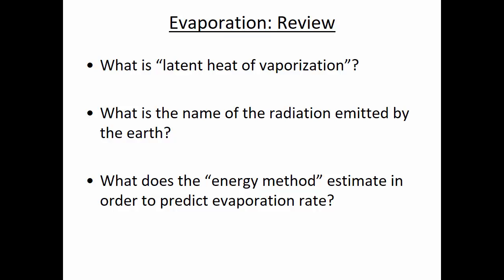The energy method estimates the radiation available to provide the latent heat of vaporization. The net radiation is the difference between the incoming and the radiation that's emitted. The incoming radiation we get from instrumentation data — measurements of how bright the sun is. Then the outgoing radiation is most easily estimated from the temperature of the object, so if we're interested in how much radiation is being emitted by water, we'd want to know the water temperature.